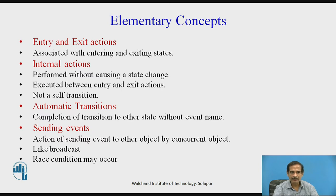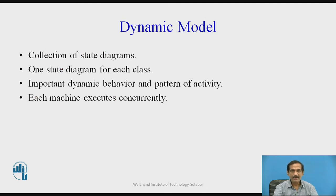Automatic transitions can happen when we have completion of a transition to another state without any event name. Then sending events, which is the action of sending an event to another object by a concurrent object, like a broadcast, may occur. A race condition might also occur in such a case because more than one object is asking for the same resource. A dynamic model is thus a collection of all these state diagrams, with one state diagram for each class.